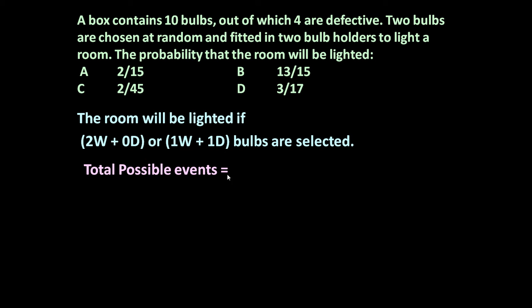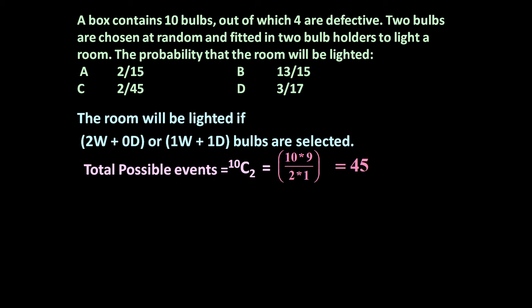So total possible events: total 10 bulbs are there and we have to select 2. That means 10C2. We have to select 2 out of 10. That is 10 × 9 divided by 2 × 1, which is equal to 45. So there are 45 different combinations of bulbs possible when drawing 2 bulbs from the box containing 10 bulbs.